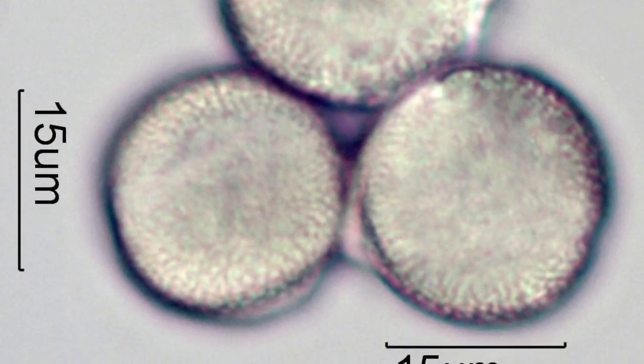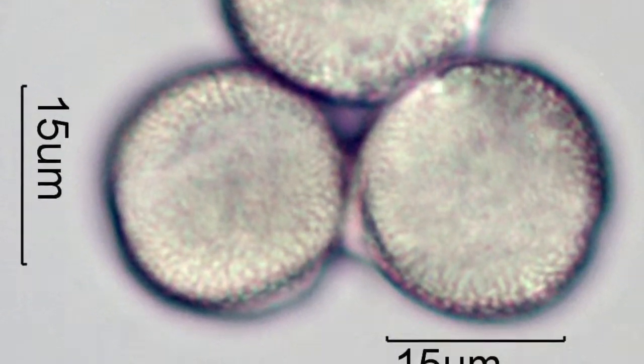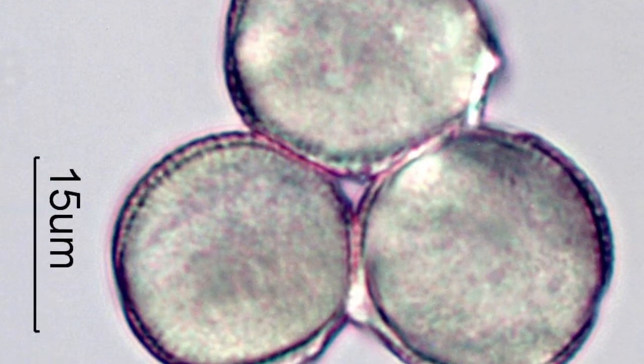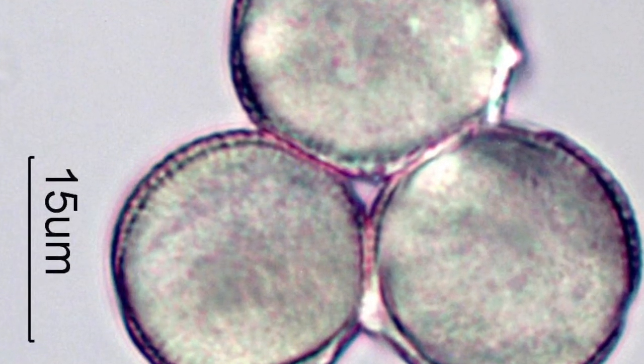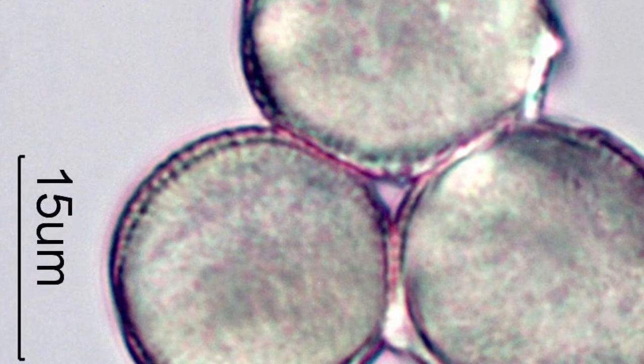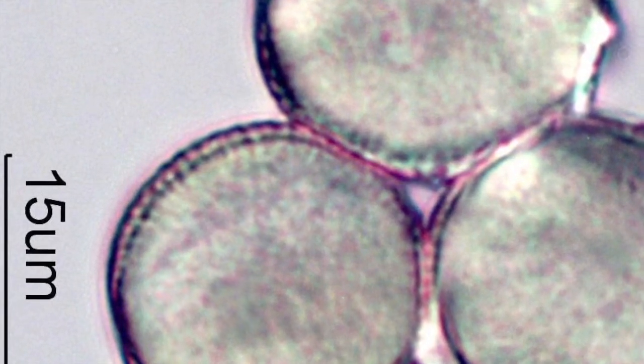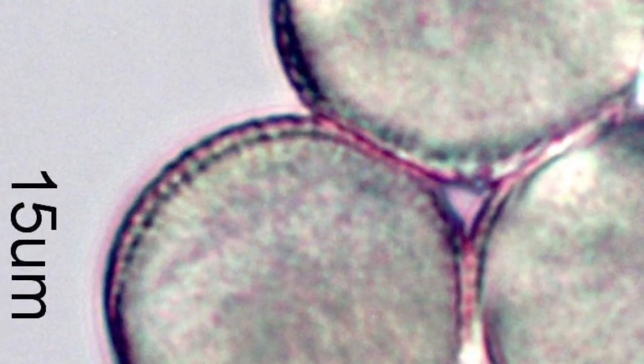Now what we want to do is focus down toward the cross-section of the pollen grain. You can see here that we can actually see the little columns that hold up that net-like structure, that those little columns are baculate. And again, another characteristic of this pollen grain.